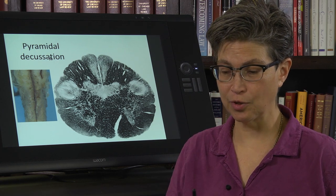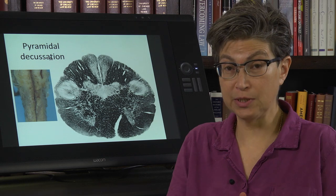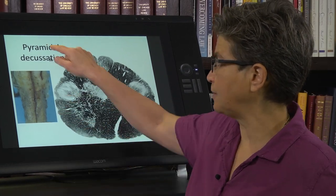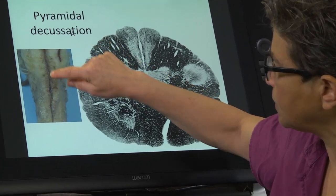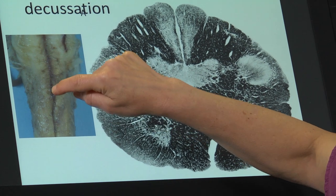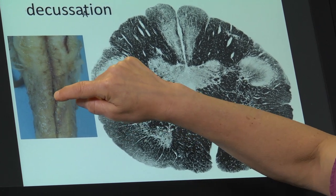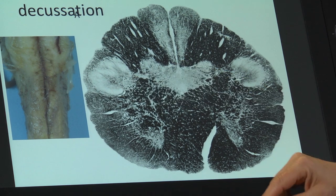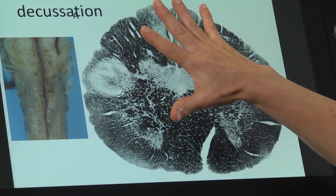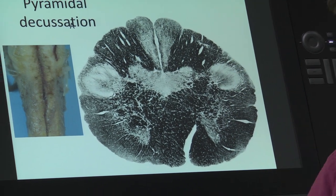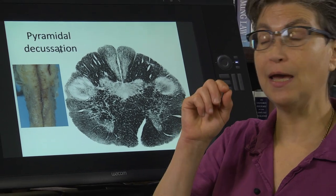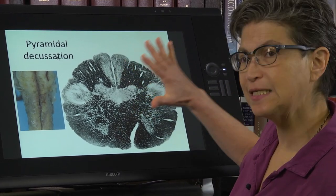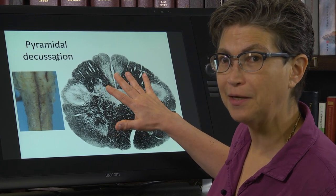We're going to go through the medulla now, dividing it into two parts: before the opening of the fourth ventricle and after. At the pyramidal decussation, here's a view — the spinal cord, the pyramids, and this is a cross-section right through that jog stained with myelin, so black indicates white matter and white indicates where neurons are located.